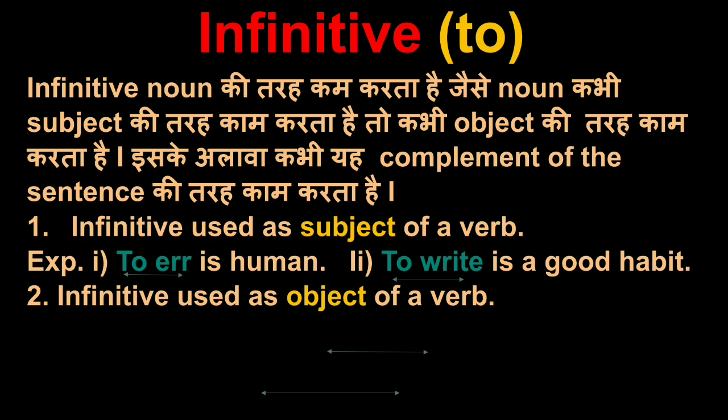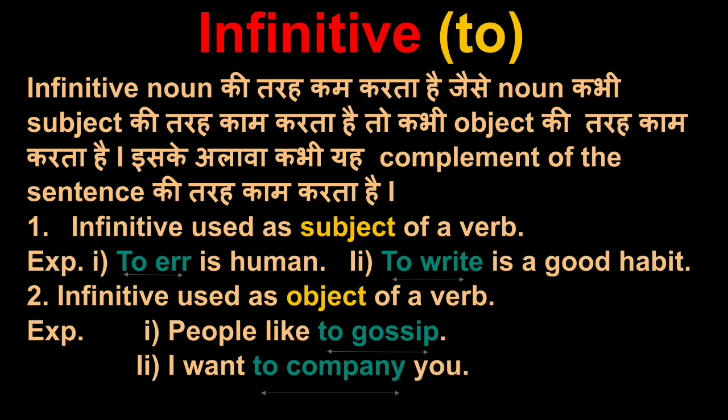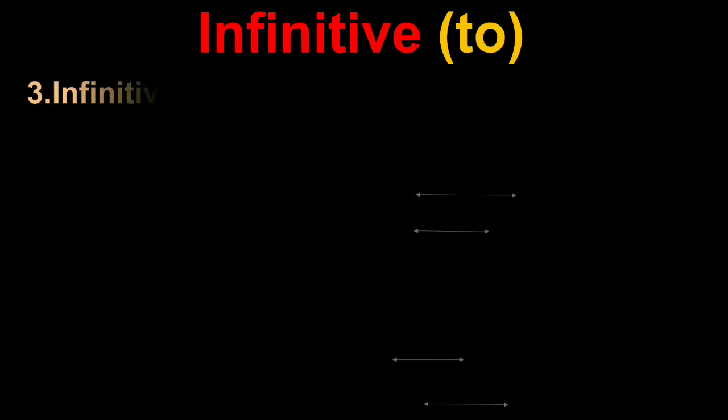Second one is infinitive used as object of the verb. How does it work as object of the verb? 'People like to gossip' and 'I want to accompany you.' To gossip is object of the verb, and to accompany is object of the verb. It is also infinitive but treated as object of the verb.